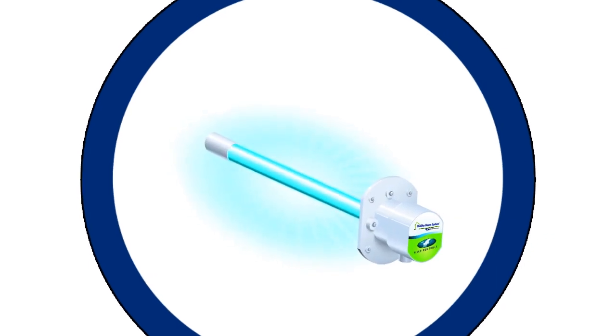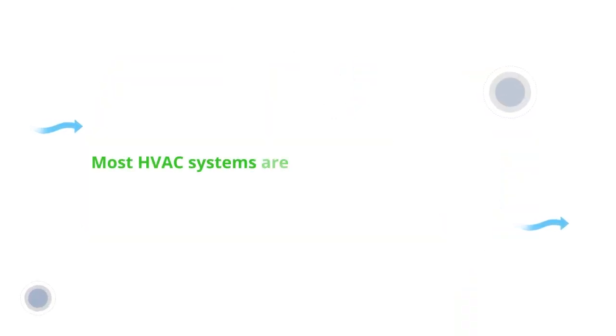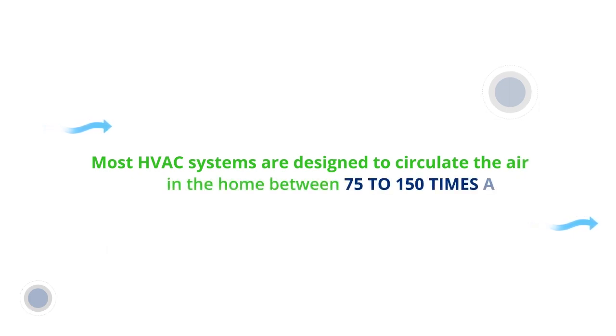A UV lamp mounted in the HVAC duct system can be effective in controlling bacteria and germs in indoor air. The UV lamp neutralizes the germ molecule's DNA and makes them unable to replicate. As indoor air circulates through the duct system, it's consistently bathed in UV light. Based on the design of central air systems, each molecule of air will circulate through or pass over the lamp 75 to 150 times a day.